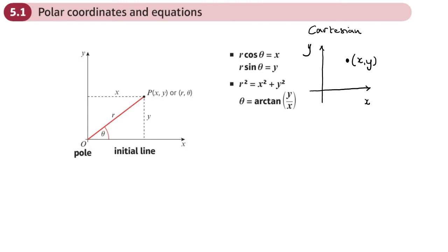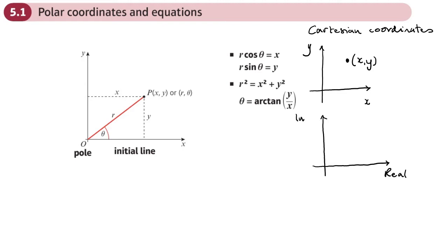These are Cartesian coordinates — the coordinates you've probably learned about from around year 4 or 5, so we know all about those. That's one way of describing a point on a 2D plane. Another way is with imaginary numbers: we have the real and imaginary axis, and we have a point displayed on an Argand diagram.